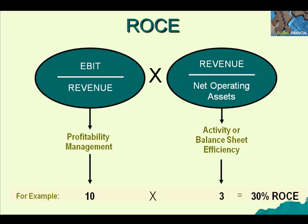In our example, if our EBIT is 10% — meaning profitability is 10% — and the effectiveness of our balance sheet is 3 times, then 10 times 3 equals 30%, which is our Return on Capital Employed.